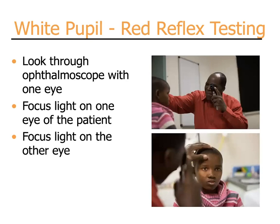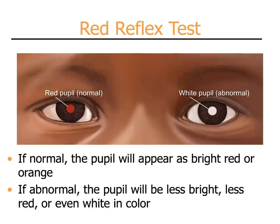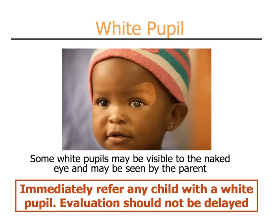When testing for a red reflex, look through the ophthalmoscope with one eye, with the patient at approximately an arm's length away. Focus the light on one eye of the patient and then switch to the other eye. It is helpful to have the lighting dim in the room while doing this, as this will give a larger pupil size and better visibility of the red reflex. Normally the pupil on the red reflex test will appear red or orange in color. If it appears white, hazy, or dark, this is abnormal. Some white pupils may be so prominent that they are visible to the naked eye and even the parents may see them. Immediately refer any child with a white pupil — evaluation should not be delayed.